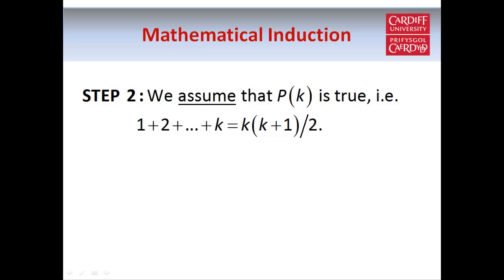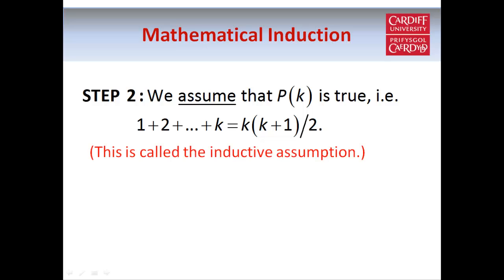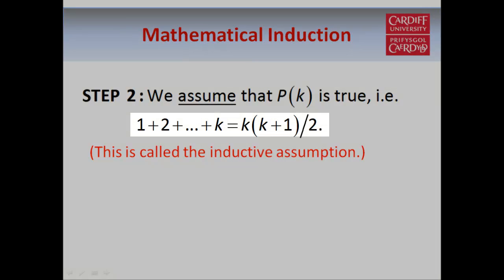In step two, we start by assuming that the statement holds when n equals k. This is not something that we have to prove — we simply assume it's true, and we call this the inductive assumption. This is really the thing that makes induction such a powerful technique, because we can carry on with the proof and use this assumption as if it's a fact. So we assume that the sum of the first k natural numbers is equal to k times k plus 1 over 2.